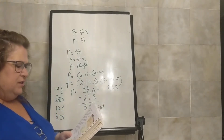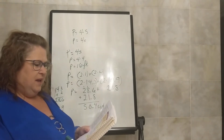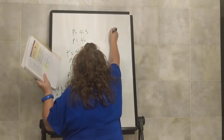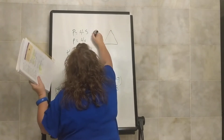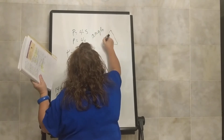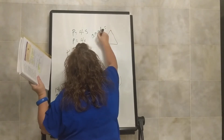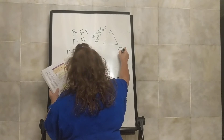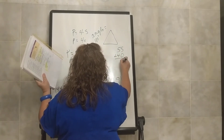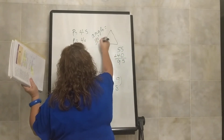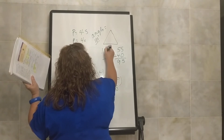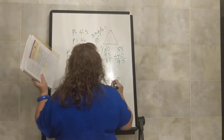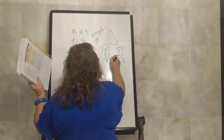Letter C: Elizabeth constructed a triangle. Two of the angles measured 55 degrees and 40 degrees. What was the measure of the third angle? Remember, the angles of a triangle, no matter what kind of triangle it is, will equal 180 degrees. So 55 plus 40 equals 95. We take 180 minus 95, which gives us 85 degrees. So the other angle was 85 degrees.